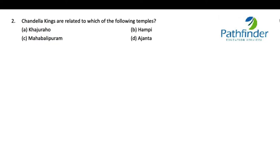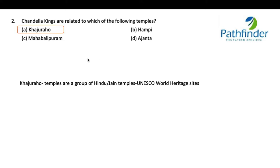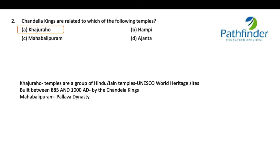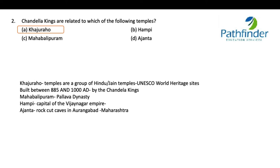Next: Chandela kings are related to which of the following temples? The options are Khajuraho, Hampi, Mahabalipuram, and Ajanta. The correct answer is Khajuraho. The Chandela kings are known for the Khajuraho temples, which are Hindu-Jain temples and a UNESCO World Heritage Site, built between 885 AD and 1000 AD in Madhya Pradesh. Mahabalipuram is related to the Pallava dynasty, Hampi was the capital of the Vijayanagara Empire, and Ajanta is a rock-cut cave complex in Aurangabad, Maharashtra.